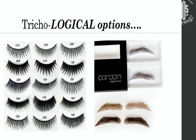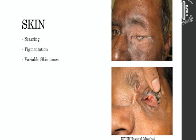We have a lot of trichological options. There are three different types of eyelashes available — as a row, as an extension — and eyebrows can be matched according to sex, skin color, hair color, and age. For a 60-year-old, you really don't need bushy eyebrows; you can simply paint eyelashes or contact your anaplastologist to do that instead of sticking lashes.